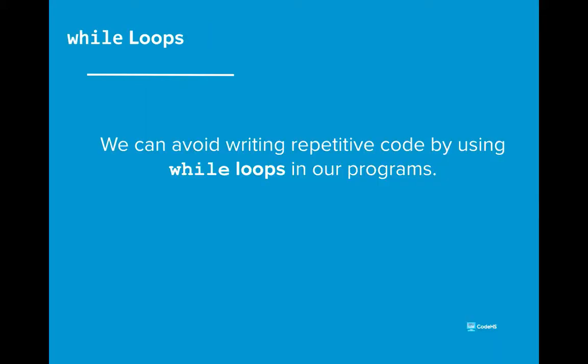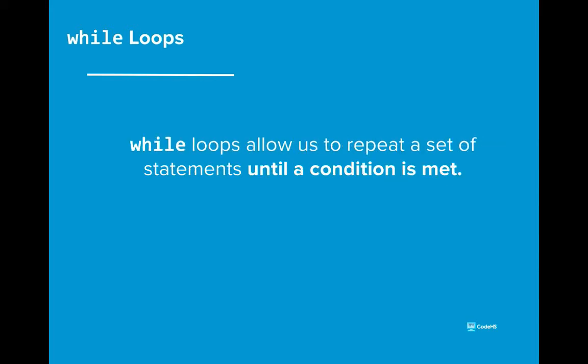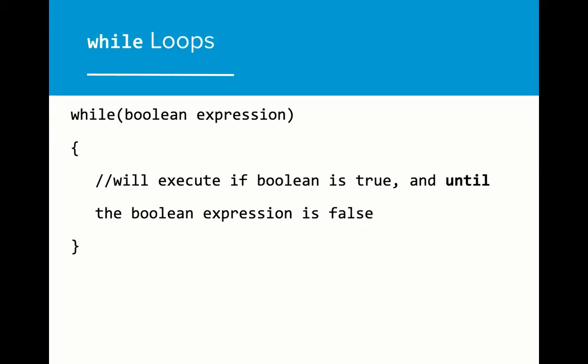Luckily, we can avoid writing repetitive code by using while loops in our programs. While loops allow us to repeat a set of statements until a specific condition is met. Similarly to if statements, while loops evaluate a boolean expression. If the expression evaluates to true, then the code in the curly brackets will execute. If the expression evaluates to false, then the while loop will be skipped over.